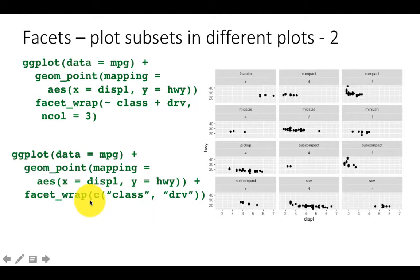Alternately, when you are doing facet wrap and you are doing it by multiple variables or in fact even one variable, instead of specifying the facet wrapping variable by a formula expression, you can just specify the names of the variables as a vector, C class drive as a vector. That is also perfectly admissible when you are doing facet wrapping.